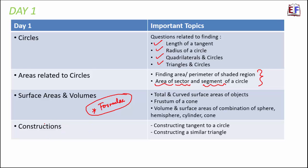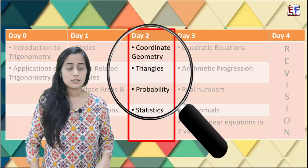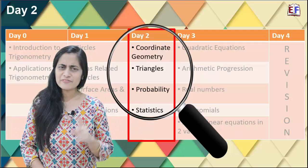For constructions, you generally do not get more than one question, but that question will be a three-marker since you have to construct something. You should practice constructing tangents to a circle and similar triangles. To summarize Day 1 priorities: circles, areas related to circles, and surface areas and volumes are high-priority lessons with high chances of getting more than one question from each. Construction is low priority — you never get more than one question from it. Now we are on day two, where we cover four lessons.